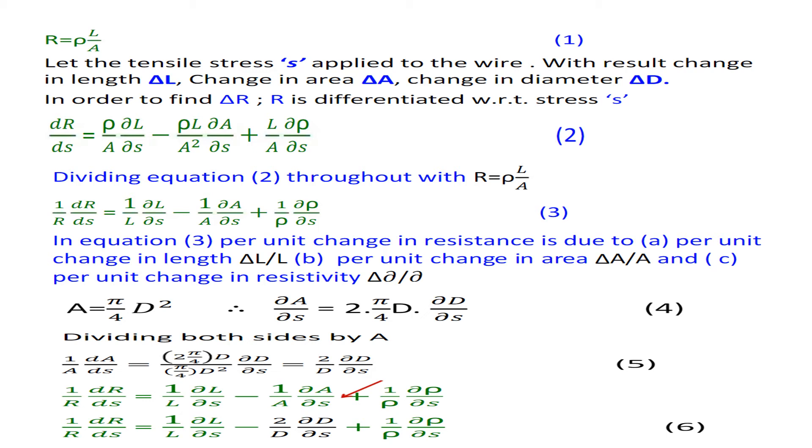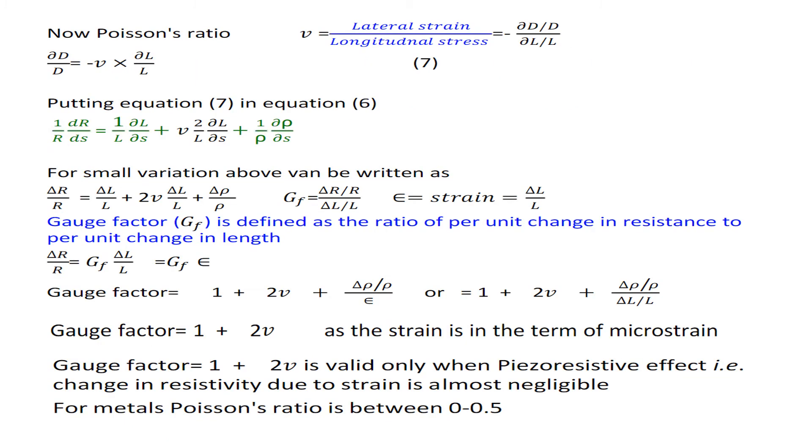Now we proceed further. We get 1/R dR/dσ = 1/L dL/dσ - 2/d dd/dσ + 1/ρ dρ/dσ. This is the derivation. Further we proceed. Now Poisson's ratio: as we know, ν = Poisson's ratio = lateral strain / longitudinal stress. This is equal to -Δd/d / ΔL/L. Δd/d = -ν × ΔL/L. This is equation 7.